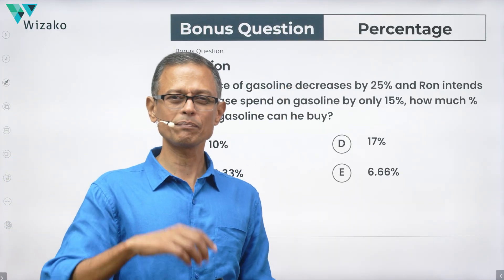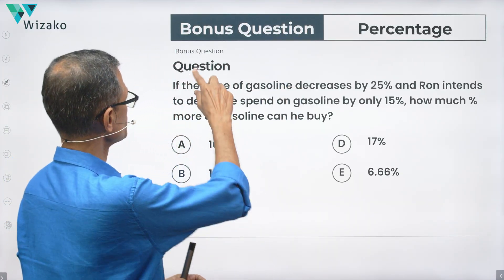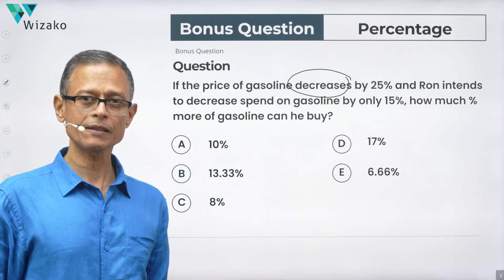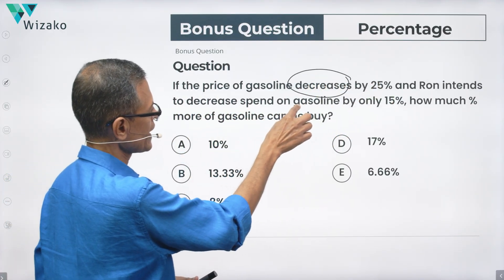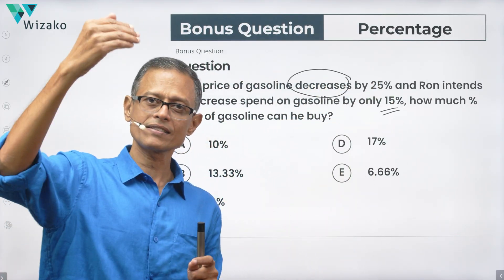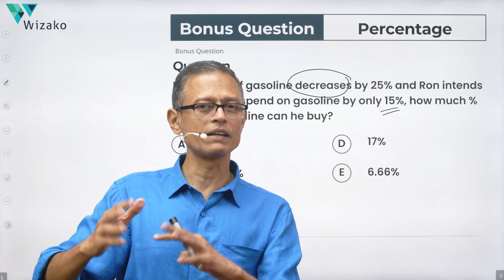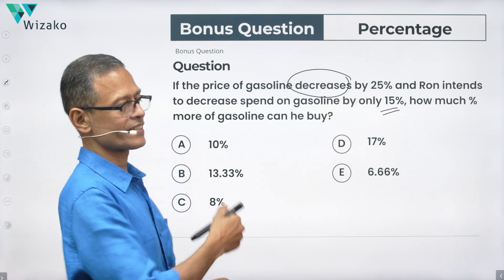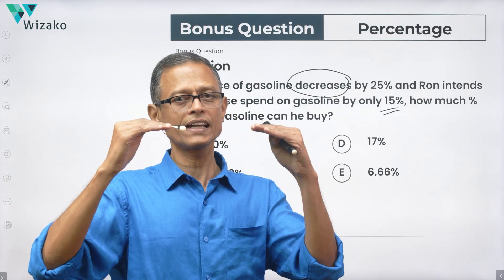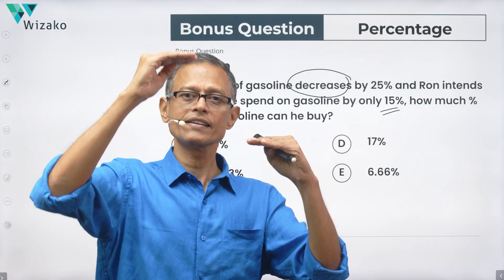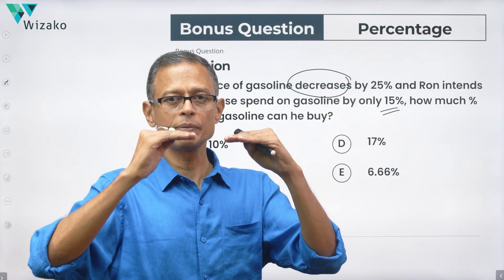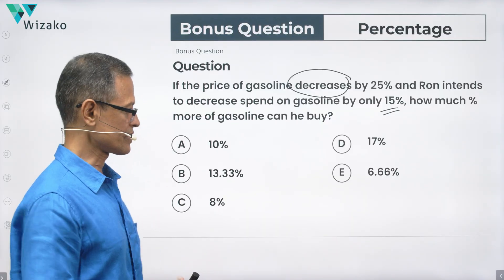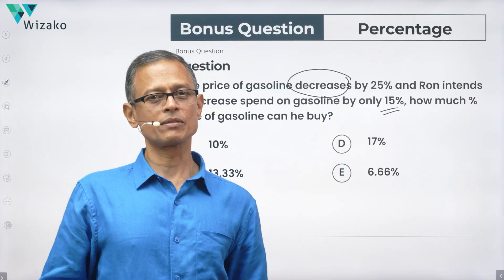Just tweaked things a little bit — kept most of the numbers the same but reversed the scenario for the bonus question. In the bonus question, the price of gasoline decreases by 25%, and Ron intends to decrease his spend on gasoline by only 15%. So price has come down by 25%, but he's not bringing down his budget by 25% — he's bringing it down by only 15%. How much percentage more gasoline can he buy? Since he hasn't brought his budget down to the same extent, he'll be able to buy more gasoline. How much percentage more will he be able to buy? Solve the question and post your answers to the comment section of this video.